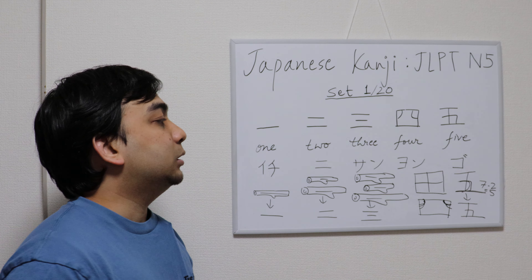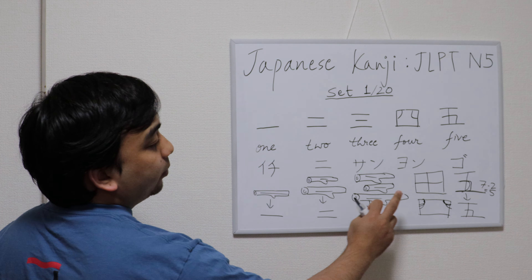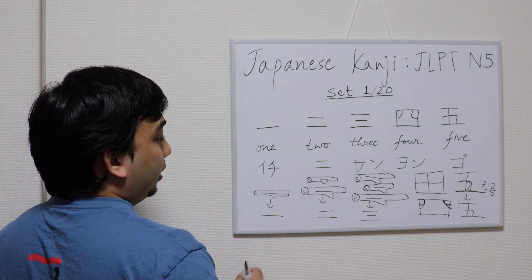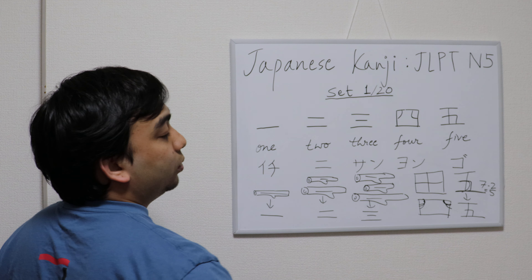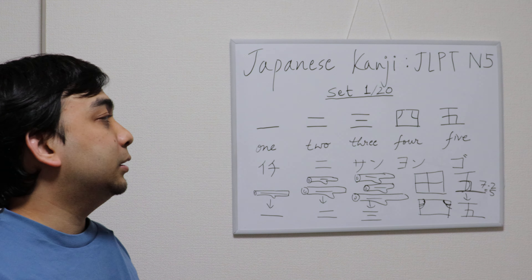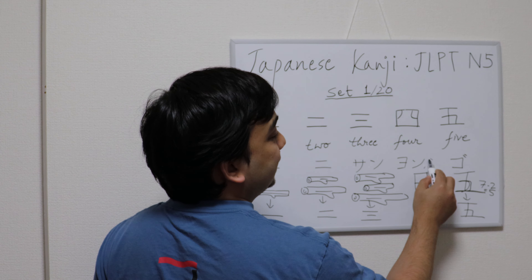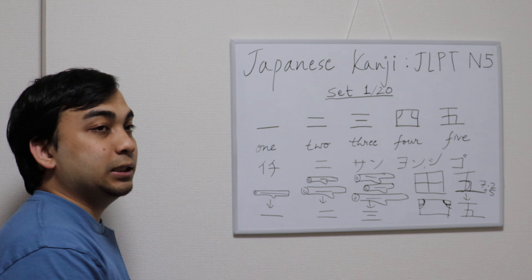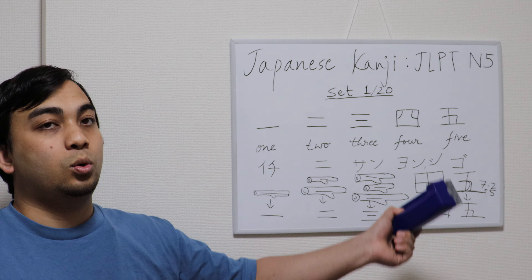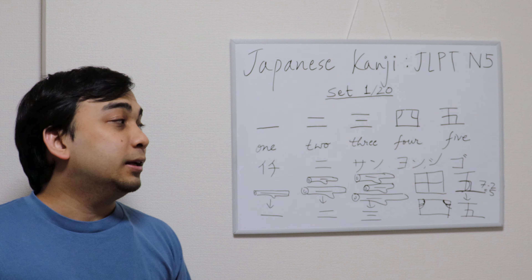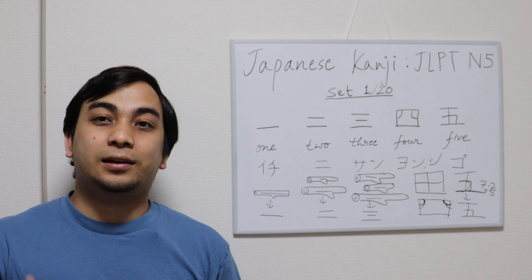So try writing these kanjis and remember them with these images, and try to pronounce them: ichi, ni, san, yon, go. By the way, four can also be called shi — ichi, ni, san, shi, go. That's the first set for today. Until we return with the second set, see ya!